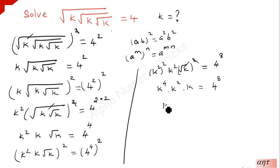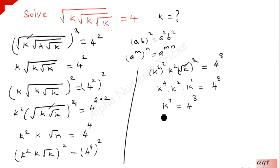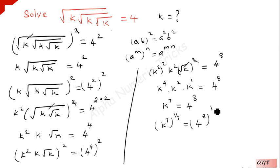We can add the powers: 4 plus 2 plus 1. 4 plus 2 is 6, 6 plus 1 is 7. So k to the power 7 is equal to 4 to the power 8. To solve for k, we take the 1/7th root on both sides — multiply the exponent by 1 over 7. So k to the power 7 whole to the power 1 over 7 is equal to 4 to the power 8 whole to the power 1 over 7. This term cancels, so k is equal to 4 to the power 8 over 7.